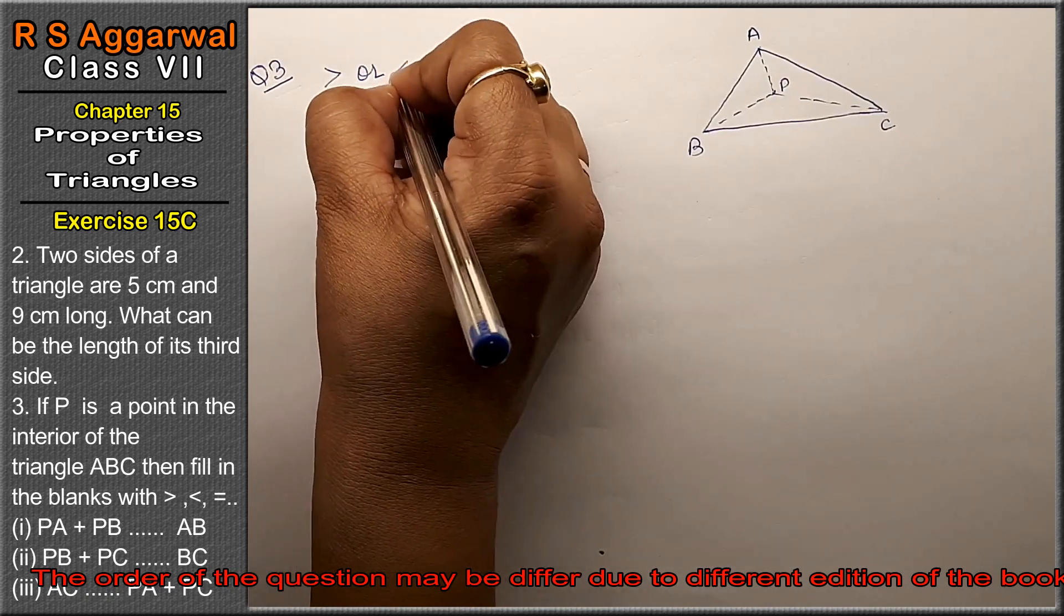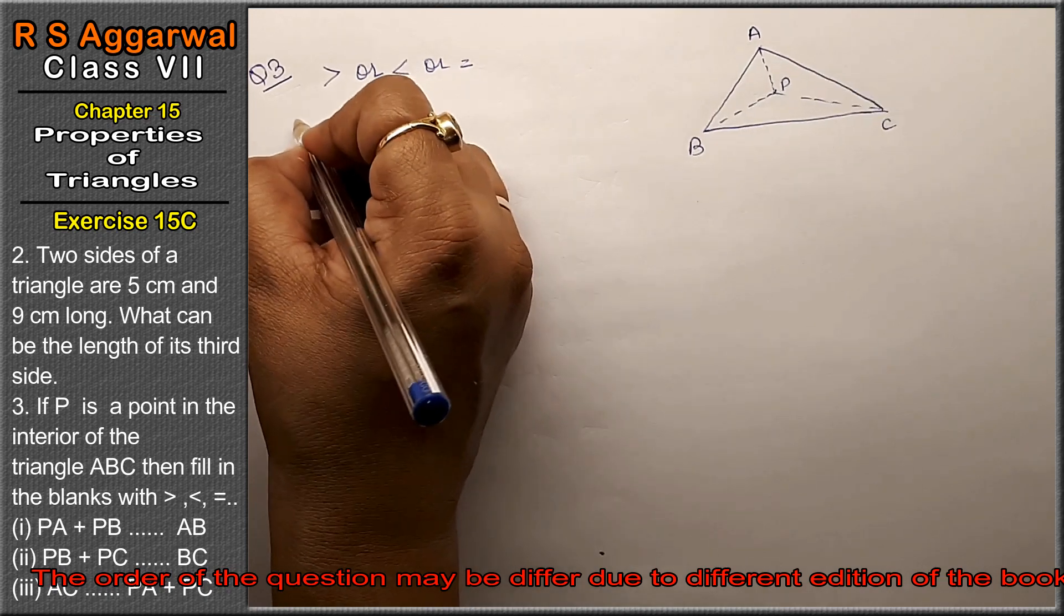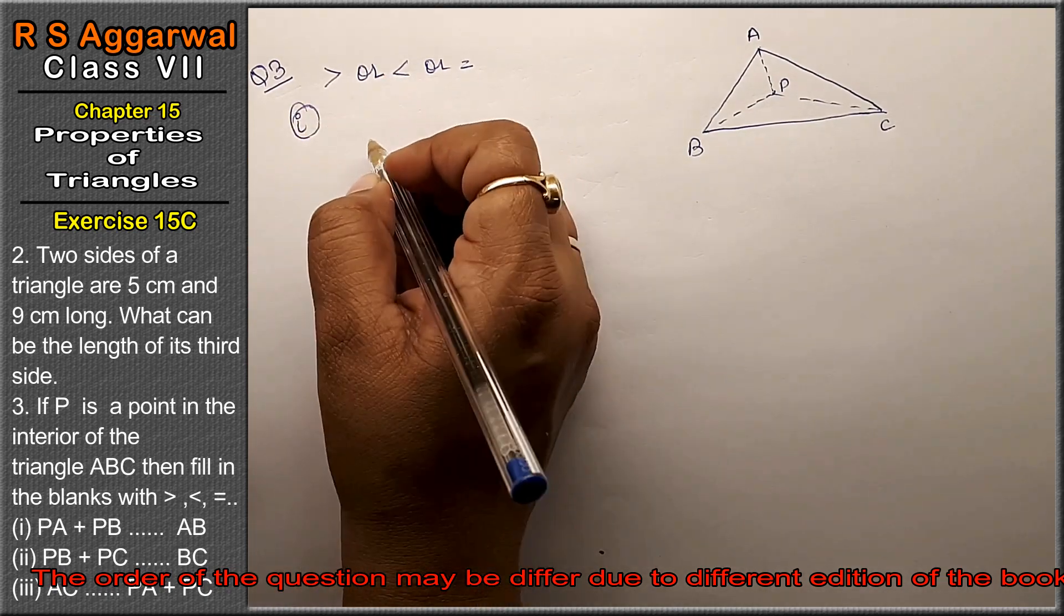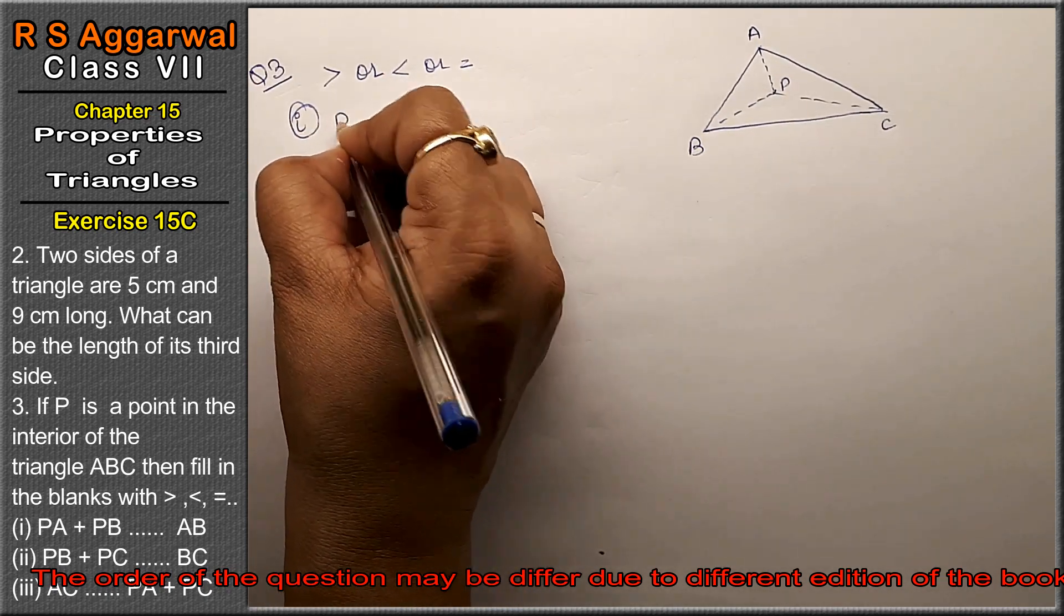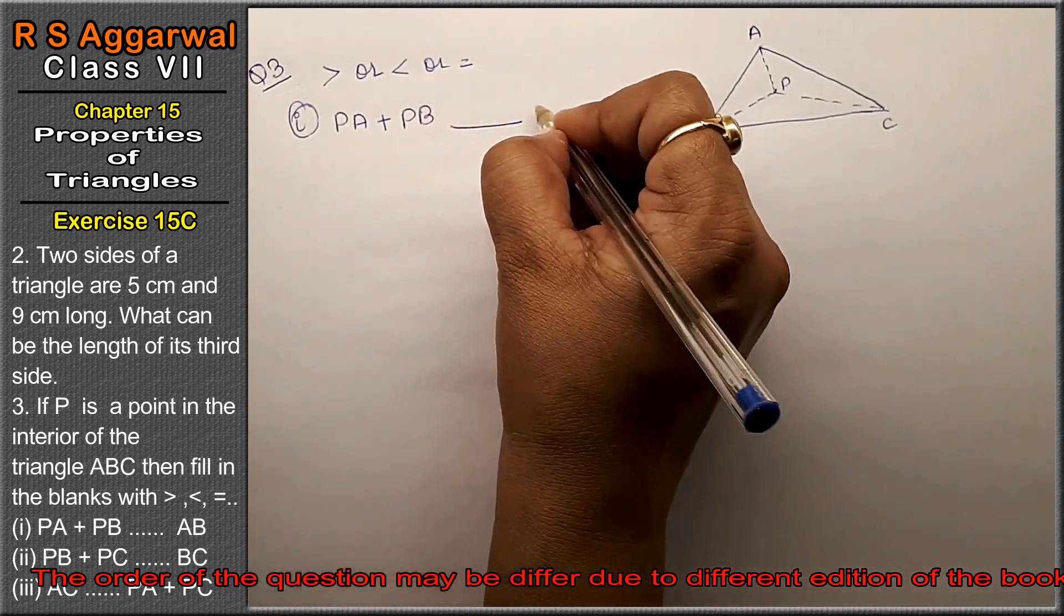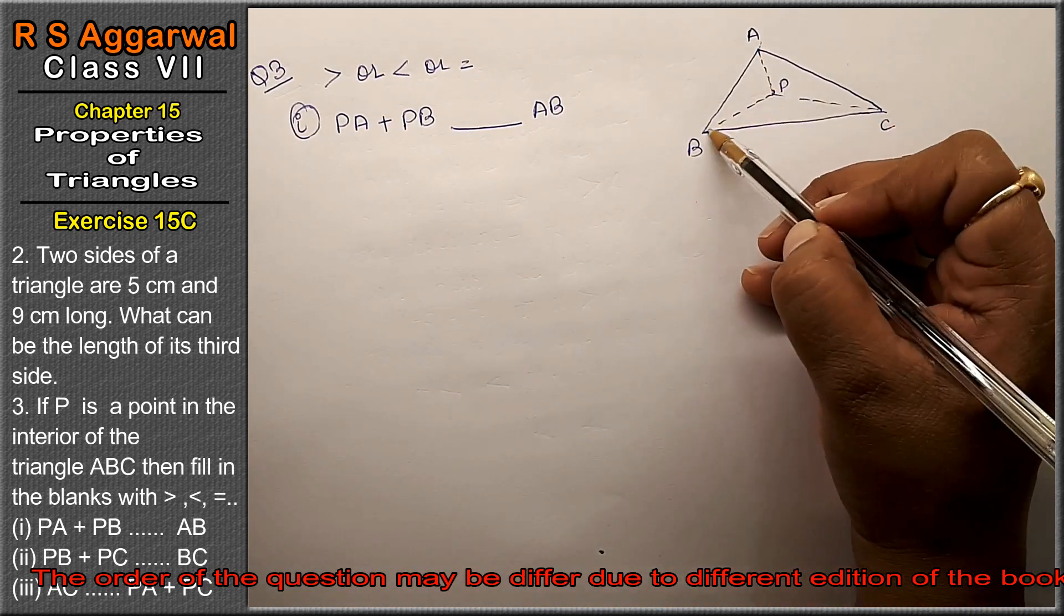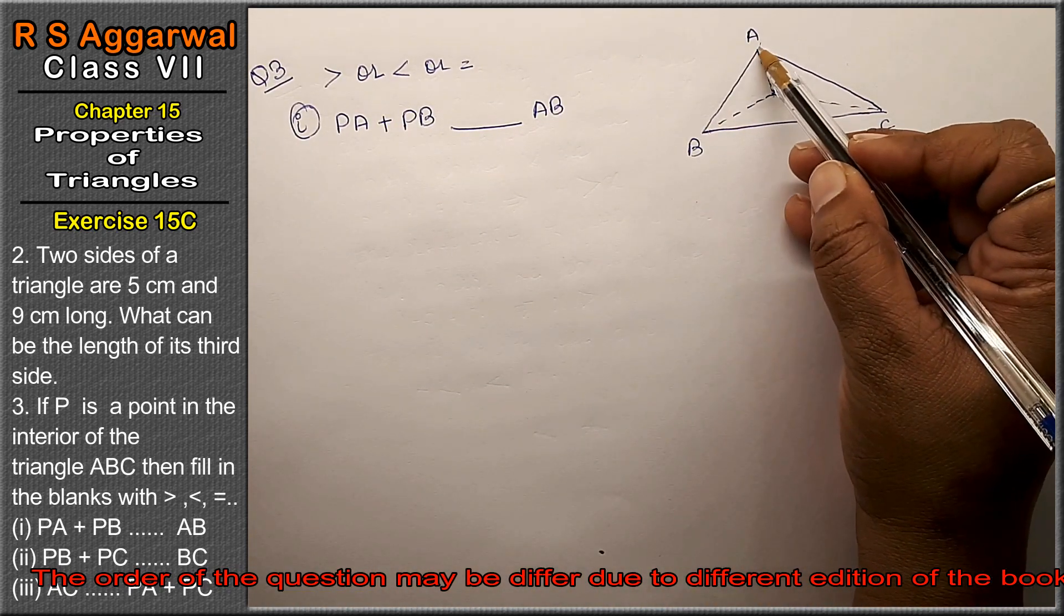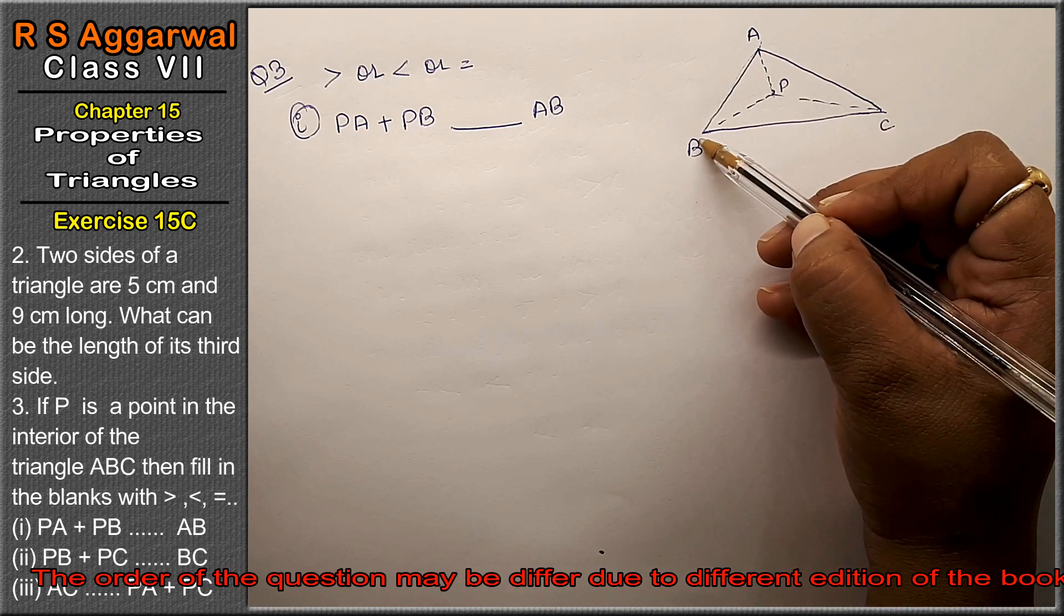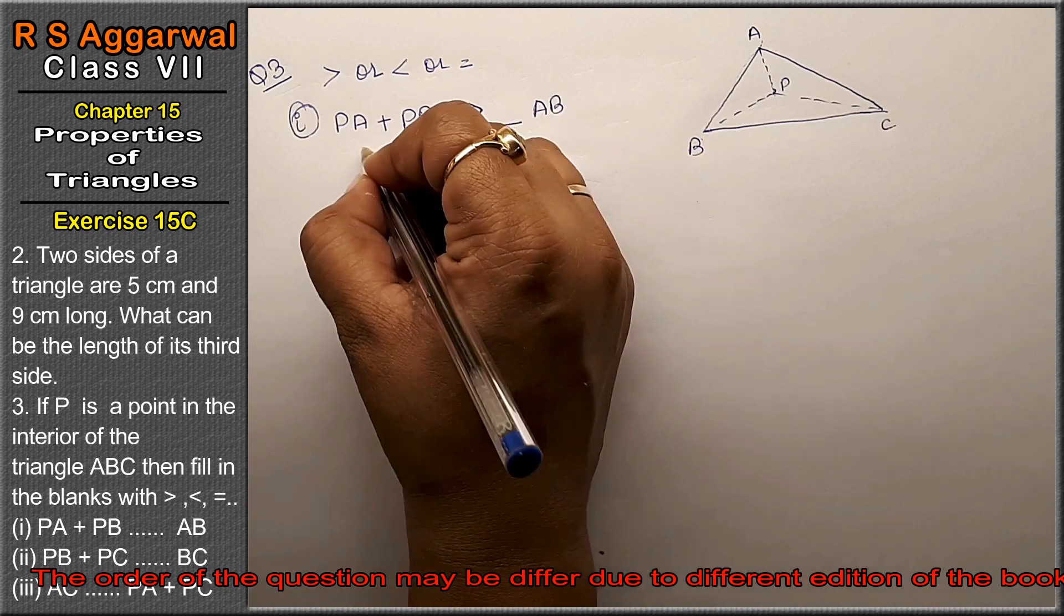First part: PA plus PB dash dash dash AB. The answer is PA plus PB is greater than AB. The sum of these two sides is greater than the third side.